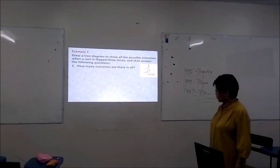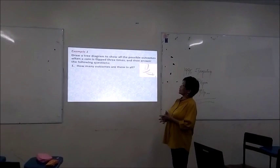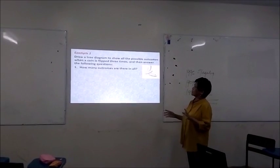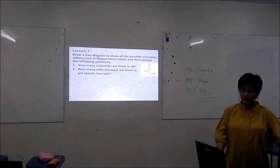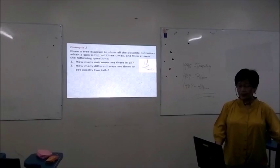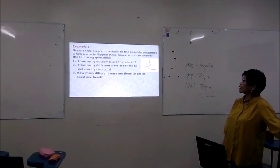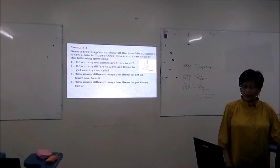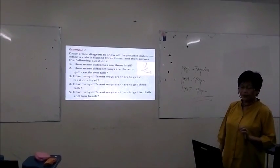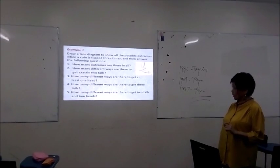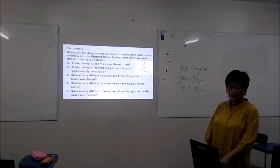We now have the tossing of three coins. Draw a tree diagram to show all the possible outcomes when a coin is tossed three times, then answer the following questions: number one, how many outcomes are there in all? Number two, how many different ways are there to get exactly two tails? Number three, how many different ways are there to get at least one head? Number four, how many different ways are there to get three tails? And number five, how many different ways are there to get two tails and two heads?